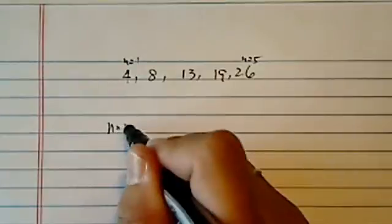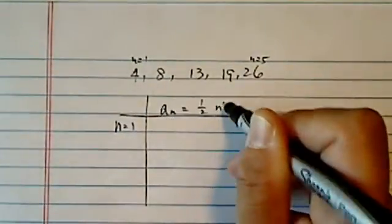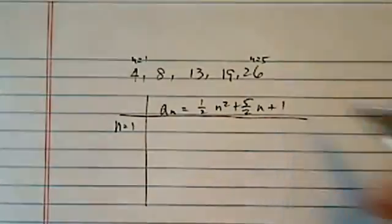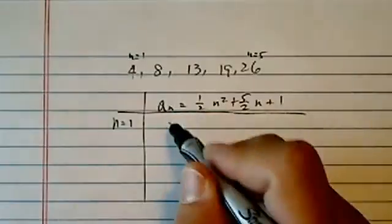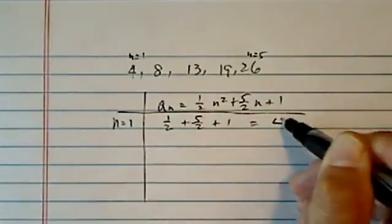n equal to 1, our rule is a_n is equal to half n squared, plus five half n plus 1. So let's check all those numbers. n equal to 1, I have a half, plus five halves, plus 1, which is equal to 4.